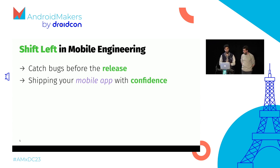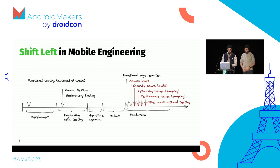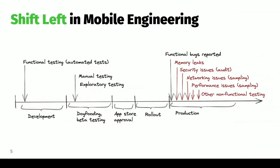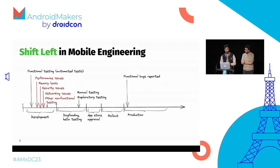Shift left is an engineering concept emphasizing the fact that you need to test your features as soon as possible — the earliest possible in your development. It helps you catch bugs way before the release and also ship your product and application with a lot more confidence. Usually we all experience finding bugs and issues with our application after production, once the application is in the hands of our users — those are the red lines you can see on the screen. You can find memory leaks, security issues, networking issues. Shift left is simply about finding those issues during the development phases.